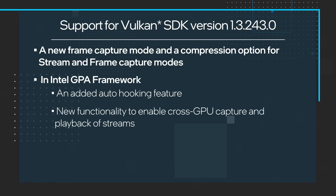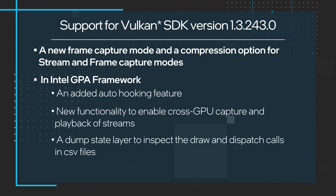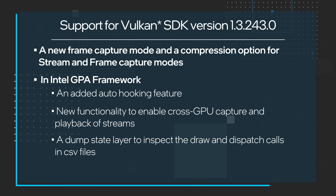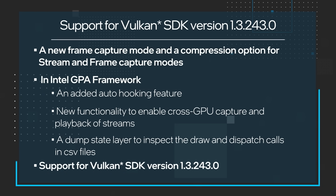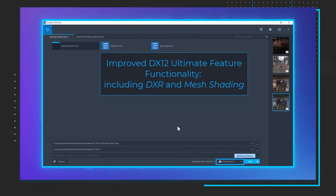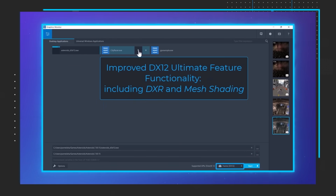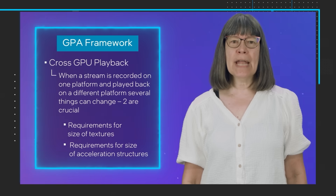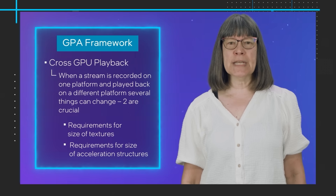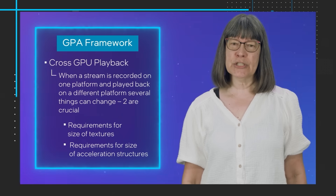New functionality to enable cross-GPU capture and playback of streams, a dump state layer to inspect the draw and dispatch calls in CSV files, and support for Vulkan SDK version 1.3.243.0. Watch the video to get all of the details, and follow the additional resource links to download Intel GPA for free.